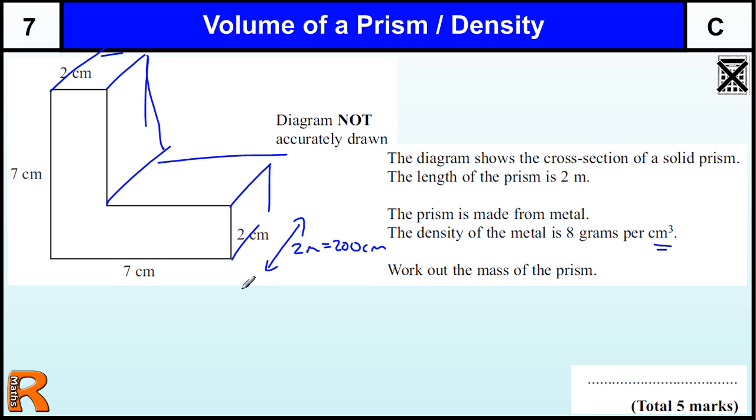The first thing we've got to do, if we're going to work out the mass of the prism, is to work out its volume. We know that we get 8 grams per centimeter cubed, so if we know its volume in centimeters cubed, we can just times it by 8 to get the mass. So the volume is going to be the area of this end times by 200, so we need to break this end piece up into two rectangles.